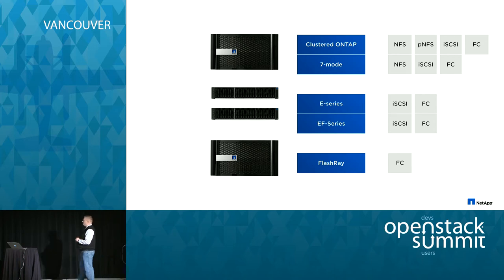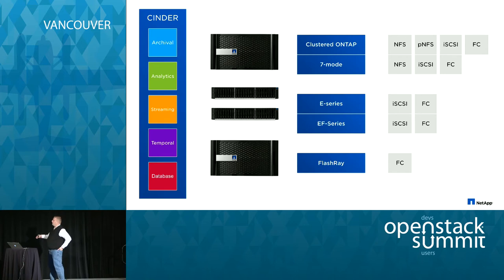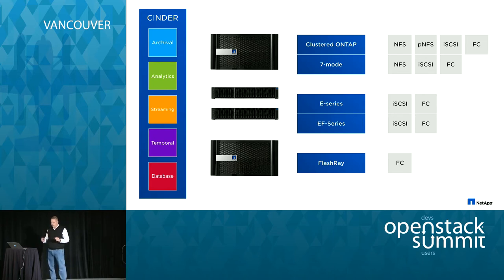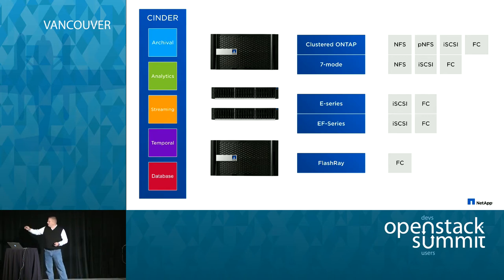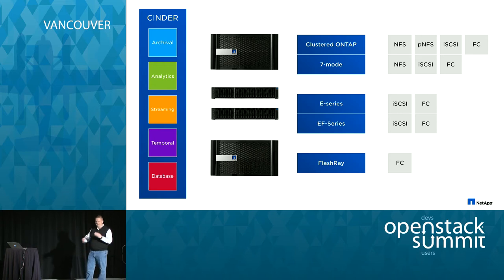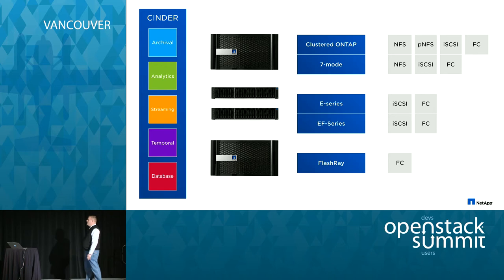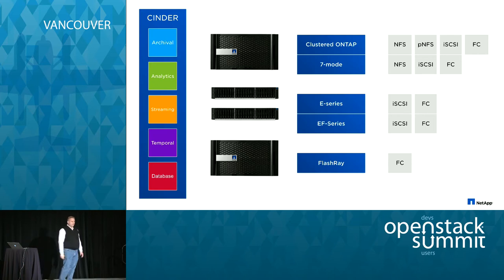A notable addition is Fibre Channel support for environments where that's required. Within our drivers, we're unlocking the distinguishing characteristics of each platform. For example, an E-Series system with large, slow, high-capacity drives might be arranged as a Cinder catalog item for more archival use. An EF-Series all-flash system might align to a streaming or analytics workload. In Cinder, these catalog capabilities are arbitrary — classically gold, silver, bronze, or some more granular notion of backend capabilities.